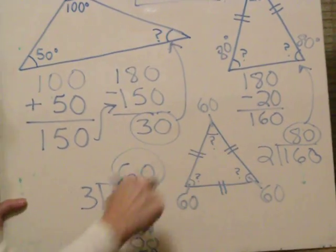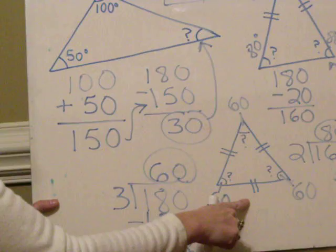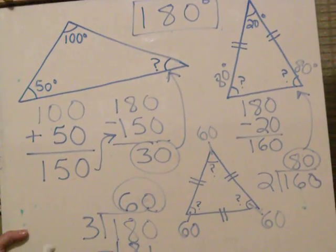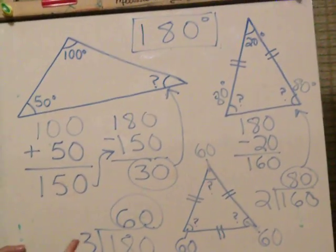And this will always be true for any kind of equilateral. And that's three different ways to find missing angles in triangles.